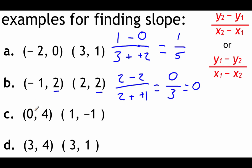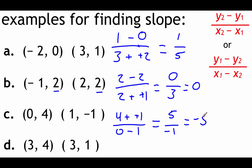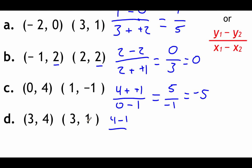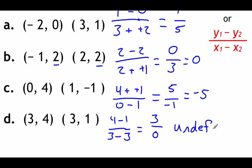Letter C: we've got 0, 4 and 1, negative 1. I'm going to go 4 minus negative 1 on top. I started with the 4, so I have to start with the 0 on bottom, minus 1. Double negative again is positive, so we get 5 across the top and negative 1 across the bottom, simplifying down to negative 5. Last one, letter D: points 3, 4 and 3, 1. Going 4 minus 1 across the top gives 3. On bottom, since I started with the 4, I start with this 3 and subtract another 3, giving 0. We've got 0 on the bottom of a fraction, which isn't allowed, so this one is an undefined value.